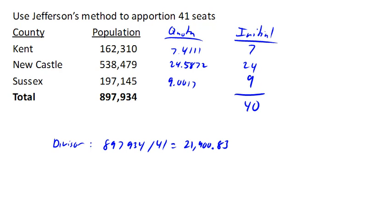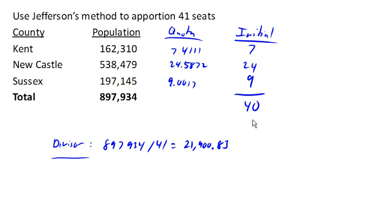Now we're going to use Jefferson's method to apportion 41 seats in Delaware. It starts out the same way — we calculate the divisor just like we did with Hamilton's method, and we divide each population by the divisor to get a quota, and then chop off the decimal parts to get an initial allocation.